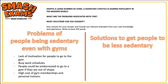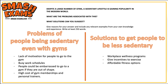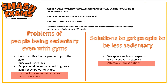For solutions to get people to be more active, I thought of: workplace wellness programs, incentives to exercise, or affordable fitness options. After brainstorming, you need to choose which ideas you want to use — the ones you could write the most about. I am going to choose the high cost of gym memberships and personal trainers as my problem, and affordable fitness options as my solution. This is my plan, and now I'm going to show you how to use it in your introduction.